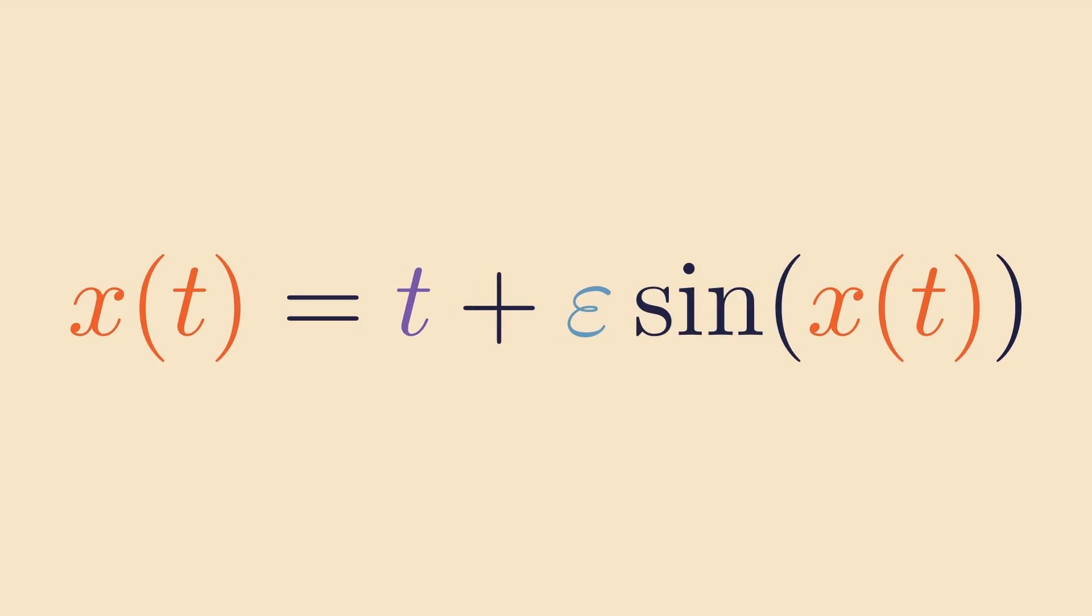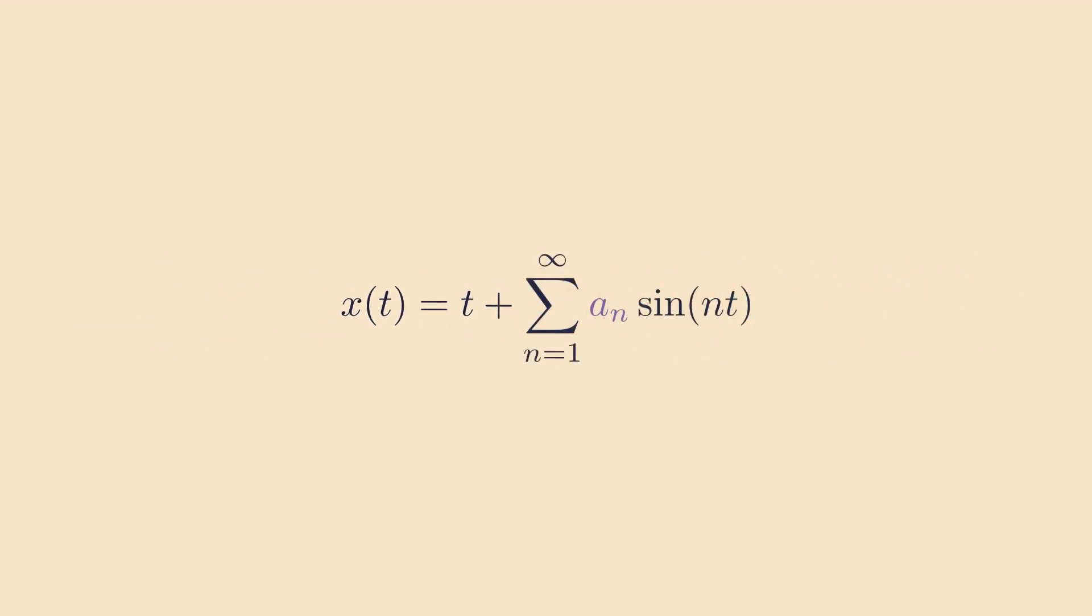To solve this, Frederick Bessel made use of the Fourier transform. Notice this sine term here. It's really annoying that it's written in terms of x(t). Fortunately, there's something we already learned about in this very video that can convert it to a function of t. That's the Fourier series representation. To simplify, we'll rearrange, and like last time, we'll ignore the summation for now.